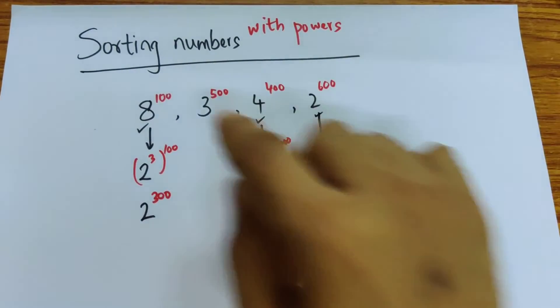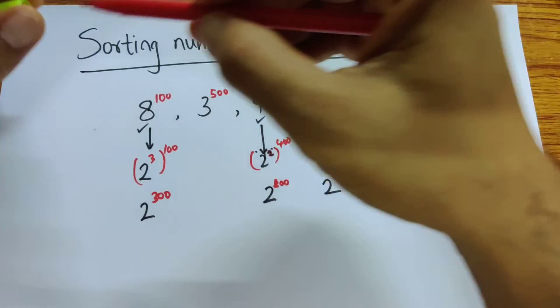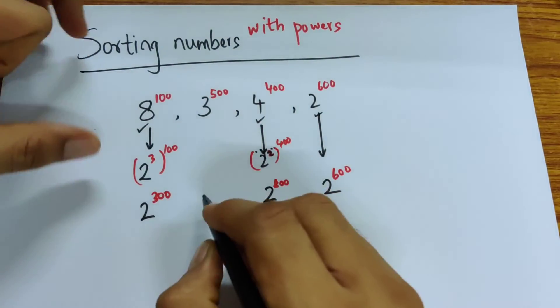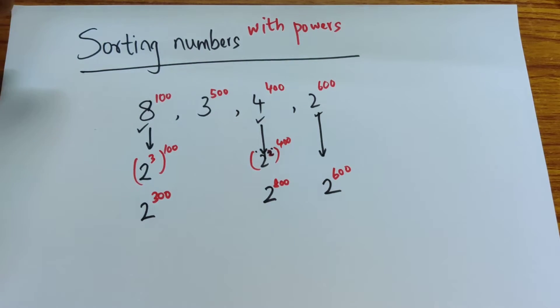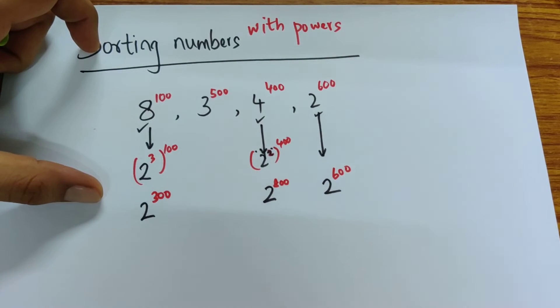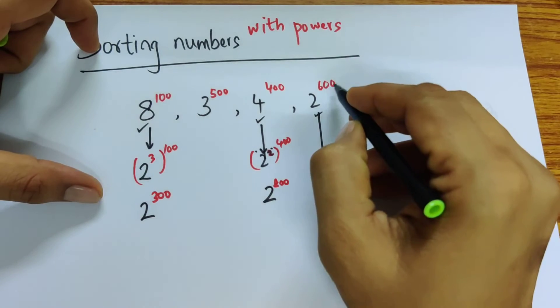These I can compare, but this one I can't. With the mathematics the children know, they won't know how to express 3 as a power of 2. You could use the log of 3 to the base 2, but we can't use that here. So we approach it an entirely different way, using the powers.